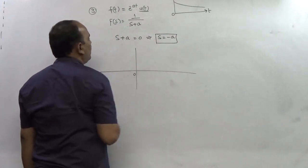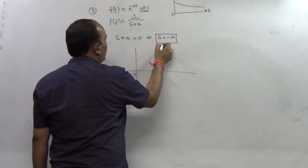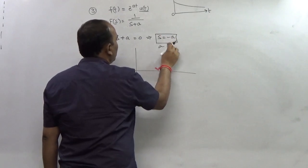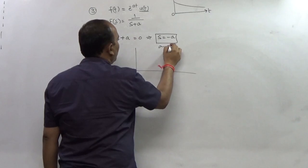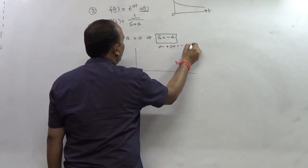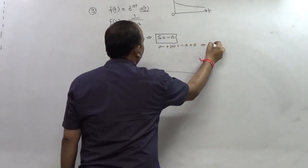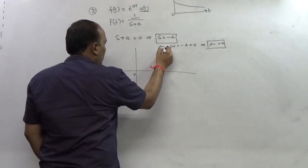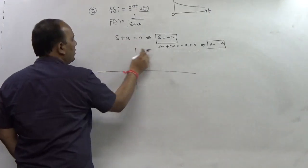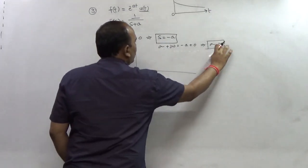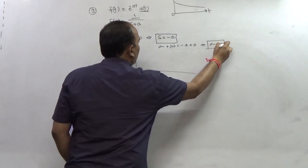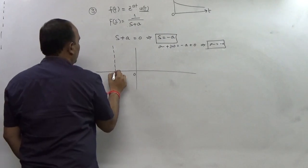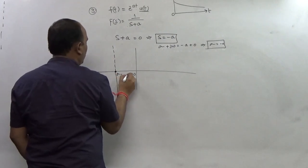In the S-plane, s = -a. Converting this, since s = sigma + j*omega, we get sigma + j*omega = -a + 0, so sigma = -a. This gives us the vertical line sigma = -a in the S-plane.